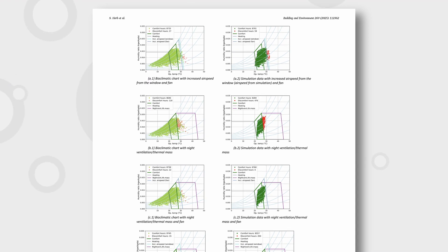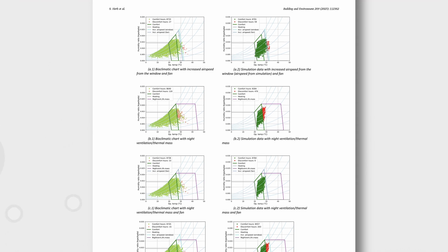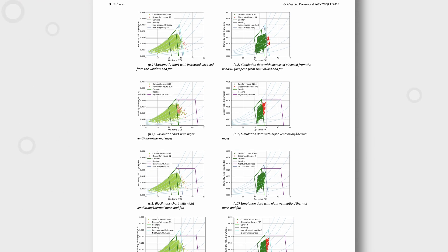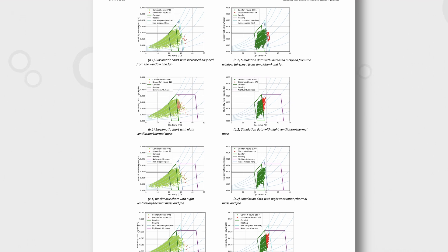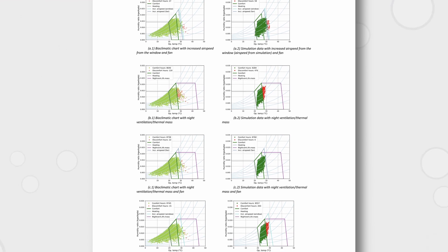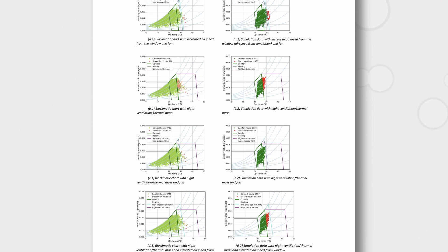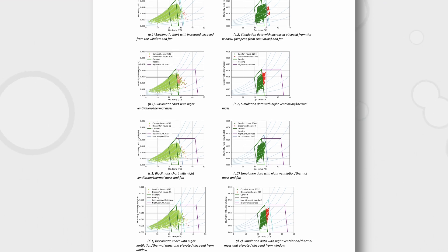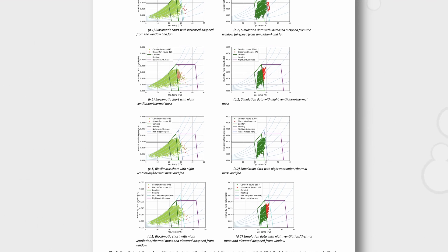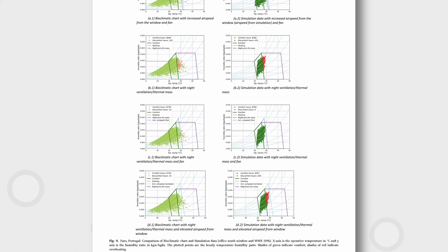For example, when combining night ventilation, thermal mass, and elevated air speed from an open window, the bioclimatic chart significantly under-predicts overheating hours because it cannot physically assume that elevated air speed from a window can be combined with thermal mass. In fact, in up to 21% of the cases, the bioclimatic chart incorrectly predicts whether a building needs an AC system, sometimes missing the need for AC altogether.